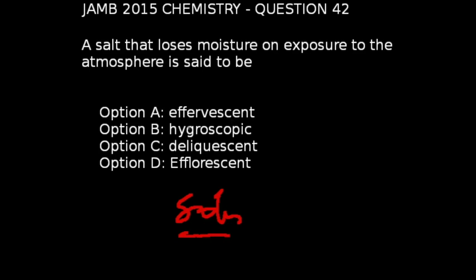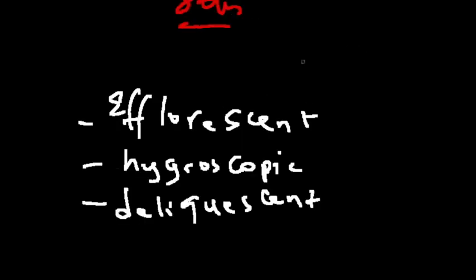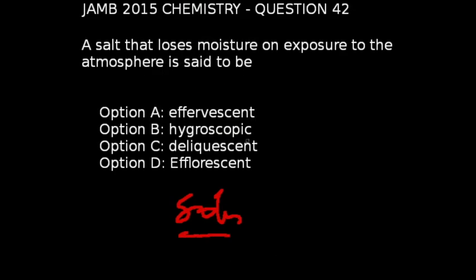Question number 42 of JAM 2015 chemistry exams: A salt that loses moisture on exposure to the atmosphere is said to be — there are three types of salt based on their behavior with water: efflorescent, hygroscopic, and deliquescent. An efflorescent salt loses water on exposure to air. Hygroscopic salts absorb water but do not form a solution, while deliquescent salts absorb water and form a solution. Based on these definitions, the correct answer is option D.